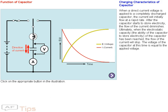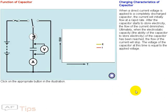Charging characteristics of capacitor. When a direct current voltage is applied to a completely discharged capacitor, the current will initially flow at a rapid rate. After the capacitor starts to store electricity,